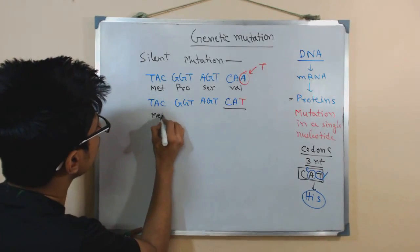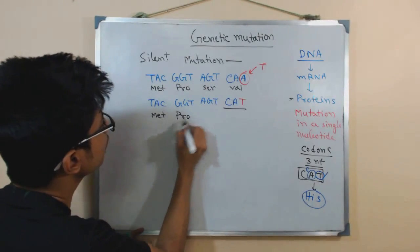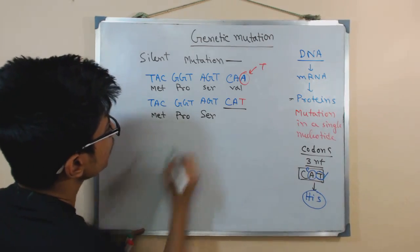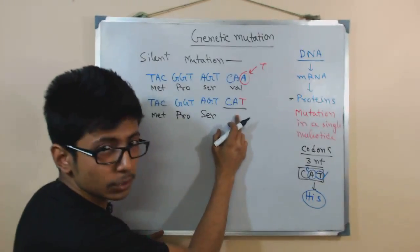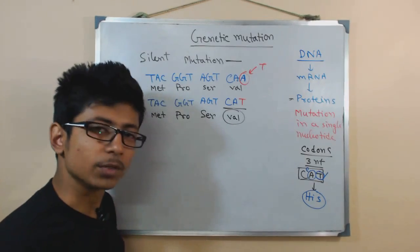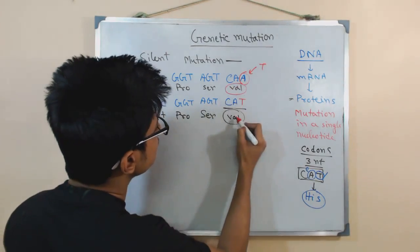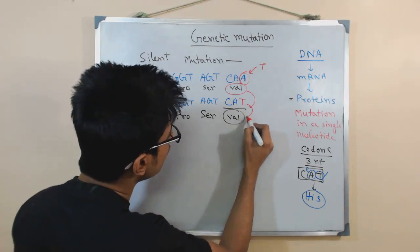Because here, instead of TAC we have methionine, from GGT we have proline, for AGT we have serine, and CAT will also code for valine. Now, that is a weird thing because CAA codes for valine, CAT also codes for valine.